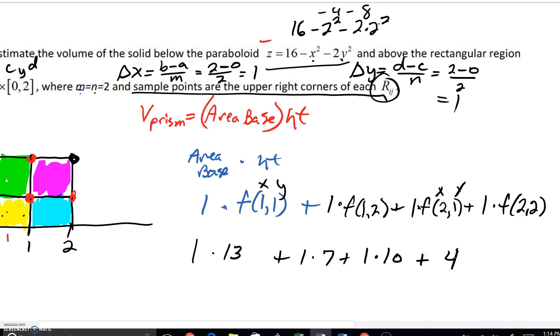So 13 plus seven is 20. 20 plus 10 is 30. I'm getting an estimated volume of 34. We doing okay? So guys, that's what we're doing so much of the day today.